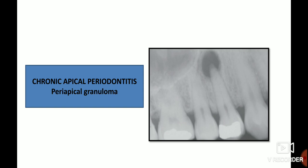A well-defined coronal radio-opacity is seen involving enamel and dentin and approaching the pulp, which is suggestive of metallic restorative material. The alveolar crest is at 1.5 mm below the level of the CEJ. The root portion shows loss of lamina dura all around the root surface. In the periapical region, there is a well-defined radiolucency of size less than 1.6 cm, not lined by a radiopaque border, which is suggestive of infected periapical granuloma.